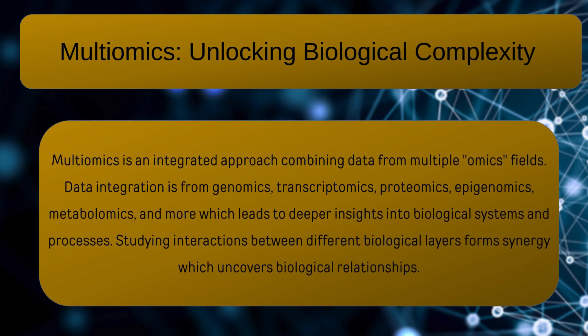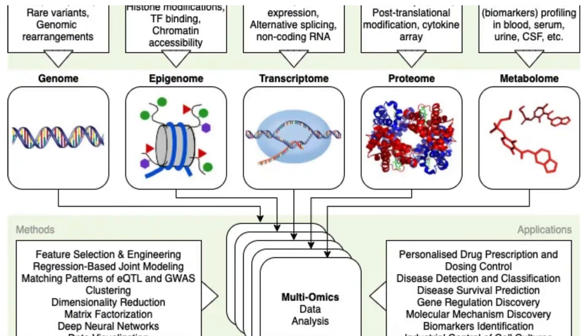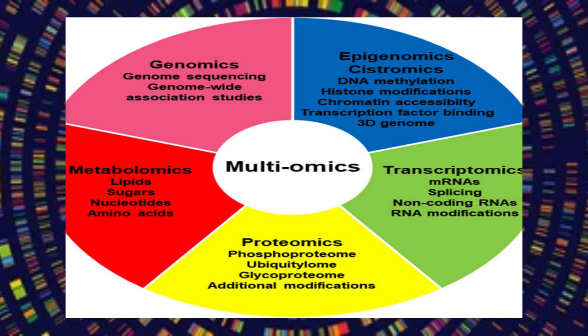Let's dive a bit deeper into Multiomics — it is a road map of everything going on inside our cells. We have different levels: genomes, epigenomes, transcriptomes, proteome, and metabolome. Breaking down the family tree of omics, there are different types like genomics, transcriptomics, proteomics, epigenomics, metabolomics, and interactomics.